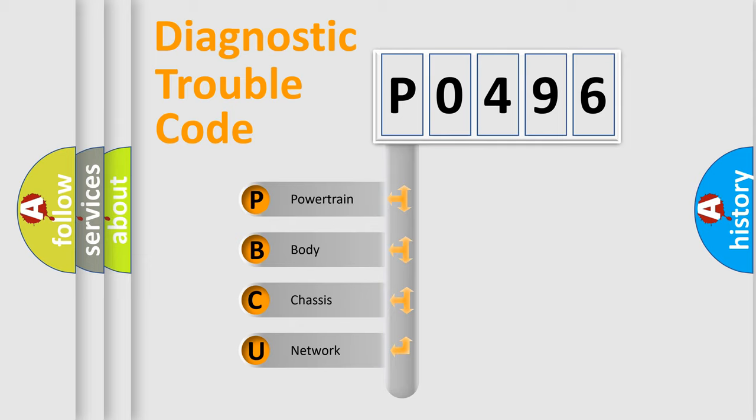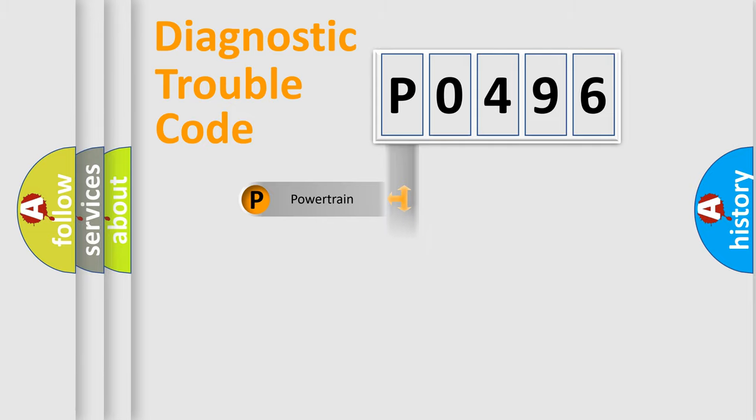We divide the electric system of automobile into four basic units: powertrain, body, chassis, and network. This distribution is defined in the first character code.